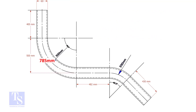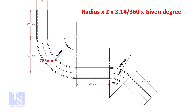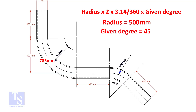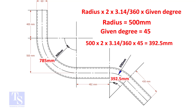The length of the 90-degree segment is 785 millimeters. Let us calculate the length of the 45-degree segment. For the 45-degree segment, the required length of the pipe is 392.5 millimeters.